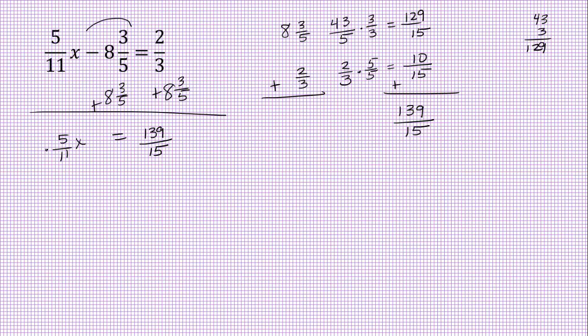So now I multiply by the reciprocal. Those reduce completely to 1x. And now I have 139 times 11. Love times 11, makes all kinds of cool patterns. So I've got 1529 over 75.